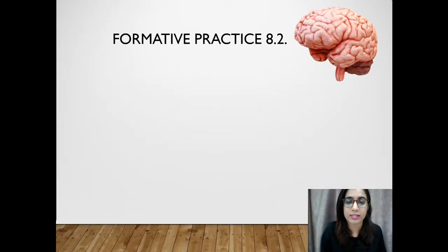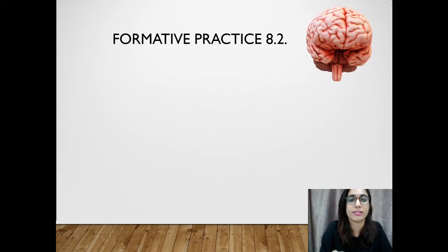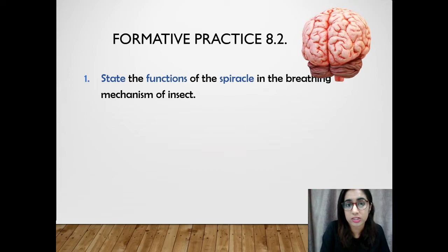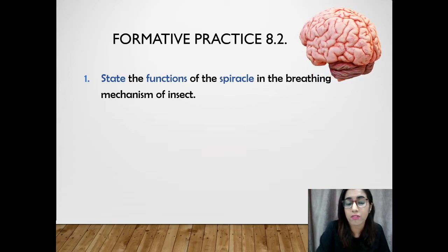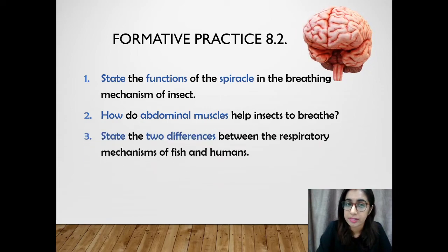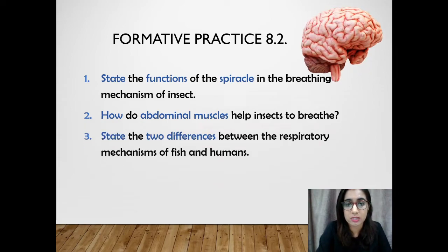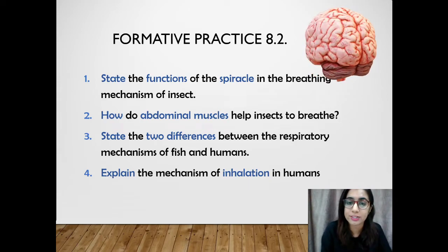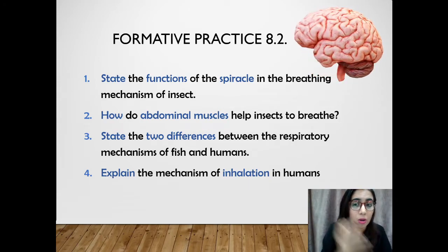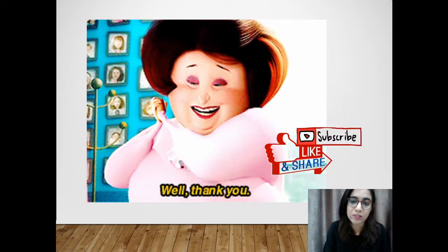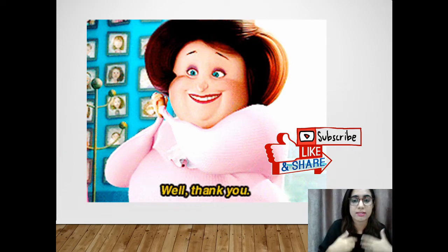You have to complete formative practice 8.2. The questions are: number one, state the function of the spiracles in the breathing mechanism of insects; number two, how do abdominal muscles help insects to breathe; number three, state two differences between the respiratory mechanism of fish and humans; and number four, explain the mechanism of inhalation in humans. I hope you can answer all these questions. If you found this helpful, don't forget to like and subscribe.